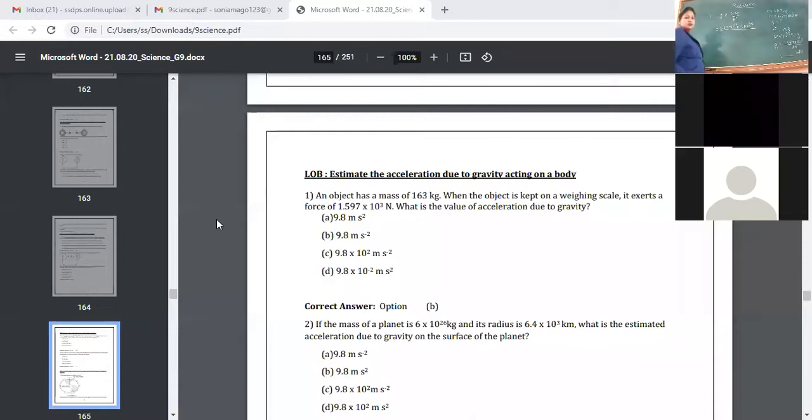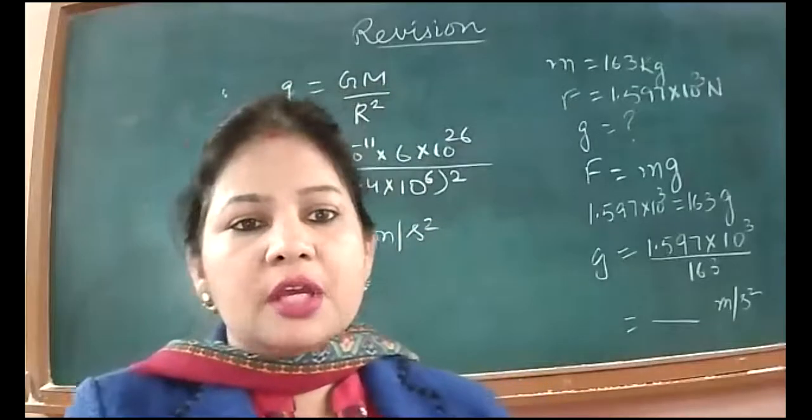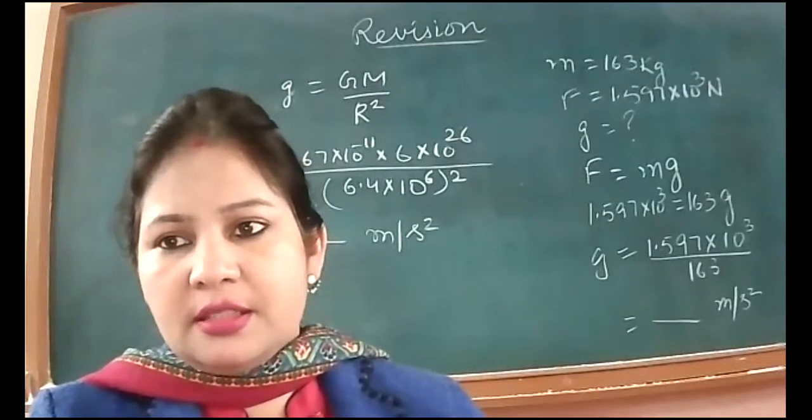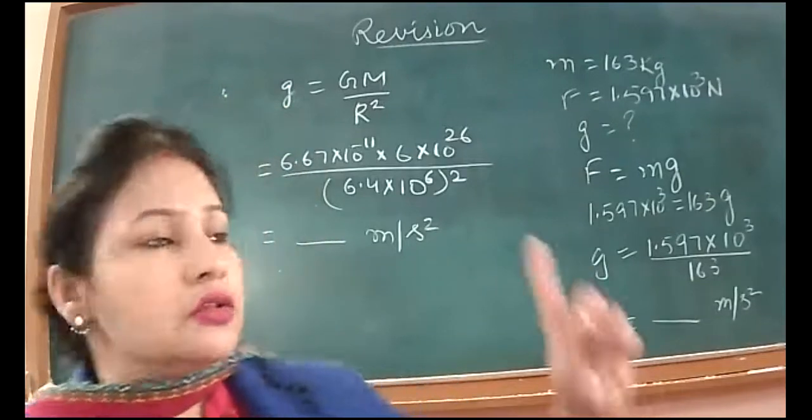If you see clearly closely, this is I think this is earth only, 6.4 into 10 raised to power 3 kilometer, 6 into 10 raised to power 24 kg. It is otherwise so it's close to that only, we are going to get that value only. This is earth only I think they have given wrong value of mass. It should be 6 into 10 raised to power 24 kilogram mass of earth. Okay let's go with whatever value is given to you. Solve this, use this formula small g is equal to GM upon R square.